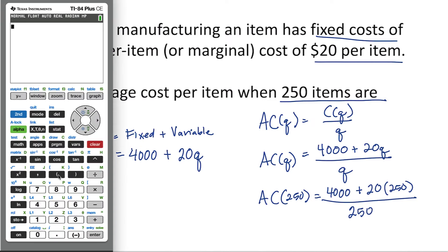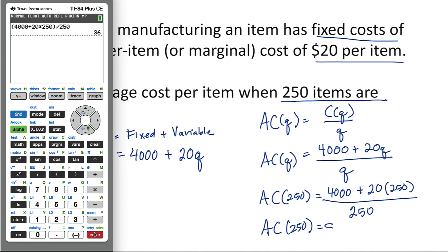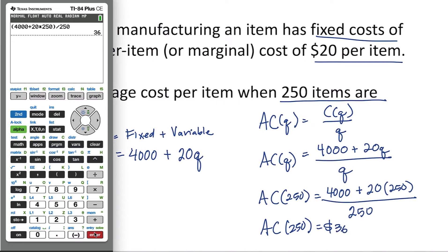Using our calculator, we'll take 4,000 plus 20 times 250, and notice I'm putting that in parentheses and dividing that whole thing by 250. And that gives us $36. So the average cost of an item when 250 items are produced is $36.